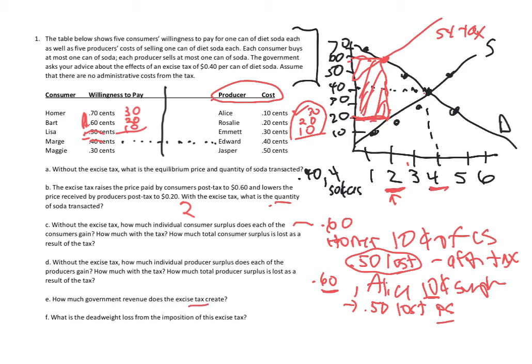How much government revenue does the excise tax create? The government revenue is the per-unit tax times the units transacted. We have two sodas transacted with the tax, and it's a 40 cent per-unit tax, so two times 40 cents gives total government revenue of 80 cents.